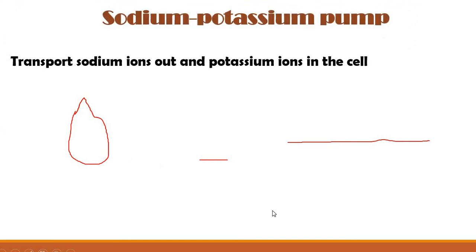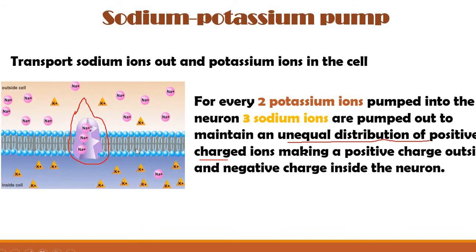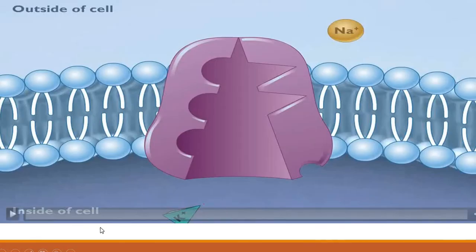When the action potential is done, the sodium-potassium pump begins to work to return the sodium ions back outside the cell and the potassium ions back inside the cell. For each two potassium ions pumped inside the cell, three sodium ions are pumped outside the cell to maintain the unequal distribution of the charges, returning the neuron back to rest, where there is more positive charge outside the cell and more negative charge inside the cell. Let's watch this video. It will explain more how this sodium-potassium pump works.